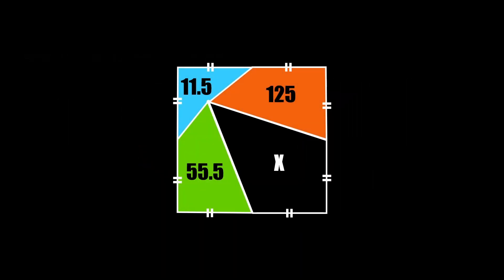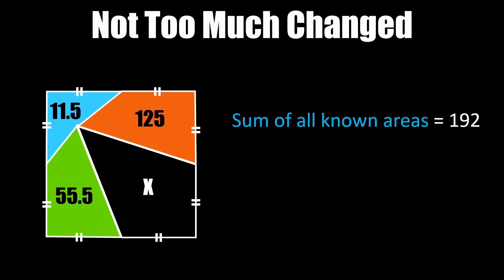This is what the square initially looked like when I first started to create this problem. There's not too much of a difference. The sum of all three areas is still 192 but now instead of the largest area being 132 it's now 125.